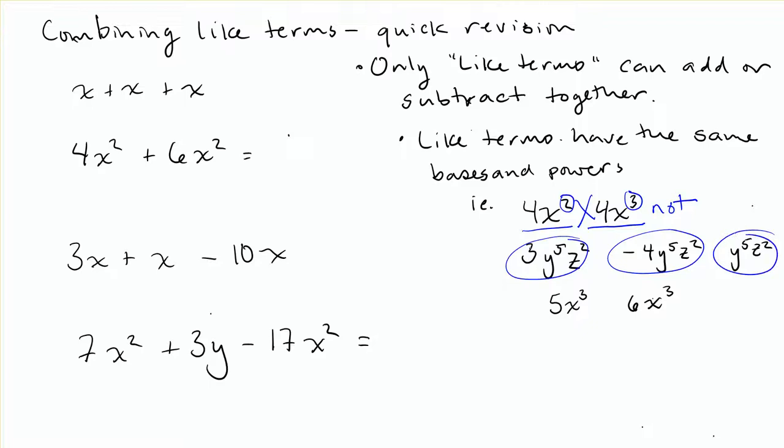So even though the coefficient, the big number in front, is different, they're still all like terms. And same here, 5 and 6 are different numbers, but those are both attached to x to the power of 3, so those would also be like terms.